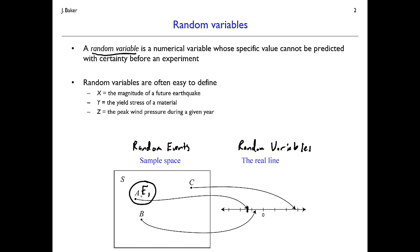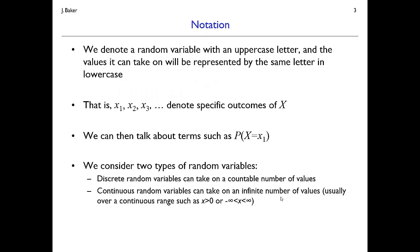Instead of talking about an event E1 or E2, we can talk about some range of numerical values. We could ask: what's the probability that my random variable takes a value within this range? That's of interest for lots of engineering problems — for example, what's the probability that the yield stress of my material is less than some imposed stress? The notation is a little heavier than random events notation, but worthwhile given the value of these calculations.